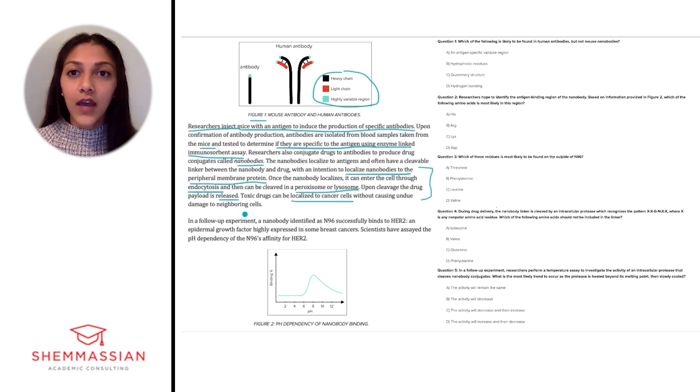The passage then goes on to tell us that in a follow-up experiment, a nanobody identified as N96 successfully binds to HER2, an epidermal growth factor highly expressed in some breast cancers. Scientists have assayed the pH dependency of N96's affinity for HER2.